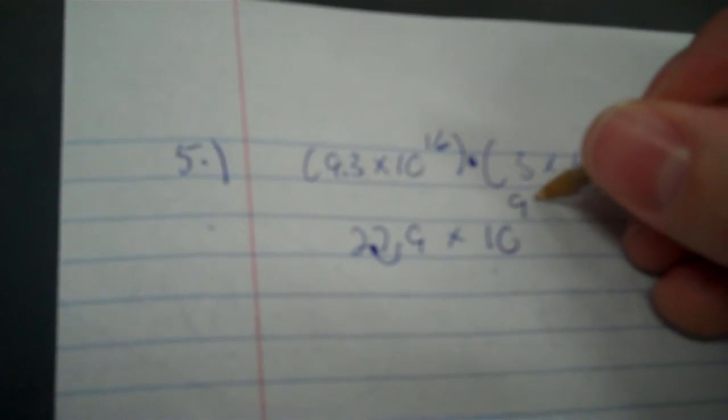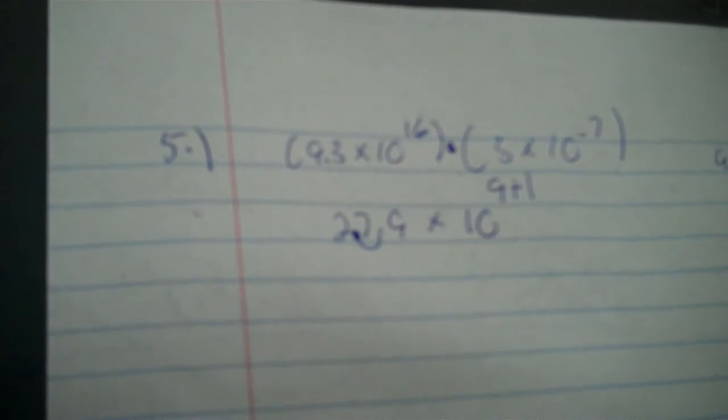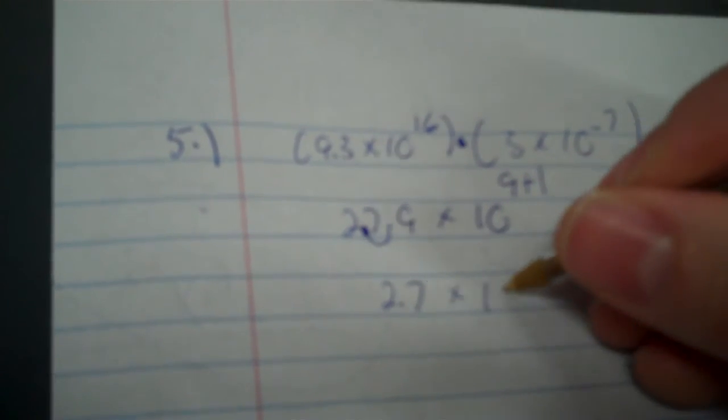Times 10 to figure out what powers on the 10, and multiplication, you add the powers. 16 plus negative 7 is 9. But, you have two digits in front of the decimal. In scientific notation, you can only have one. So, I move it backwards, 1. And, when I move backwards, I add 1 to the power. So, it's two points. Because I'm making it smaller here, so I make this bigger. Times 10 to the tenth.